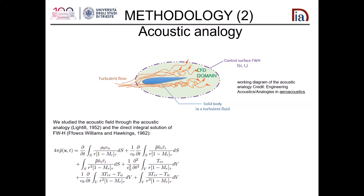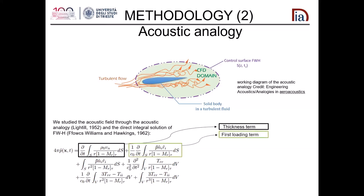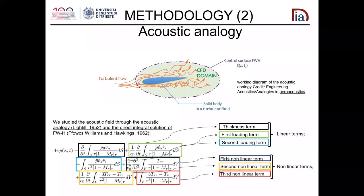In this equation, there are three terms. The first is the thickness term — the sound due to the vibration of the body, depending on the velocity of displacement. The second term is a time derivative of the pressure on the body, called the loading term. The third term also depends on pressure on the body. These three surface integrals are the linear part of the Ffowcs Williams–Hawkings equation. There is also a nonlinear volume integral representing the sound related to the turbulent wake and vortices — this is why we need Large Eddy Simulation.